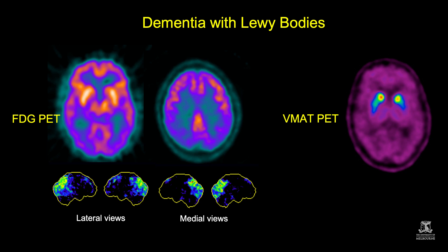This is a case of dementia with Lewy bodies, showing hypometabolism in not only the parietal cortex but also the occipital lobes, with sparing of the posterior cingulate gyrus visible in the middle image, and the VMAT-PET showing a reduction in putamen innervation.